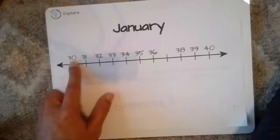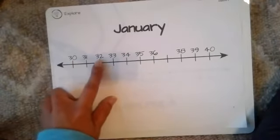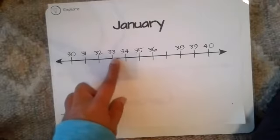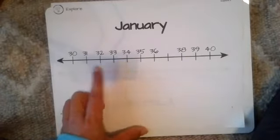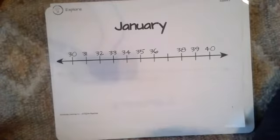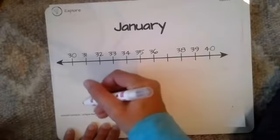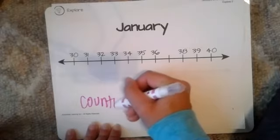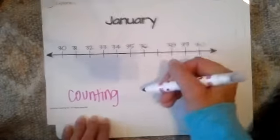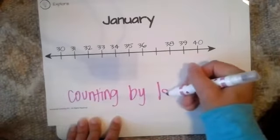Let's look. We have 30, 31, 32, 33. Do y'all see a pattern? What do you see that they are counting by? Let's say it out loud, loud and proud — they're counting by ones.